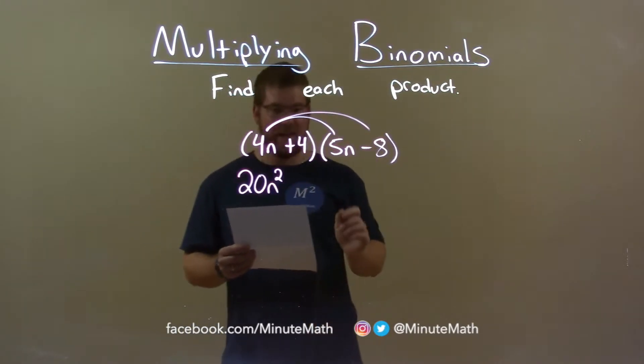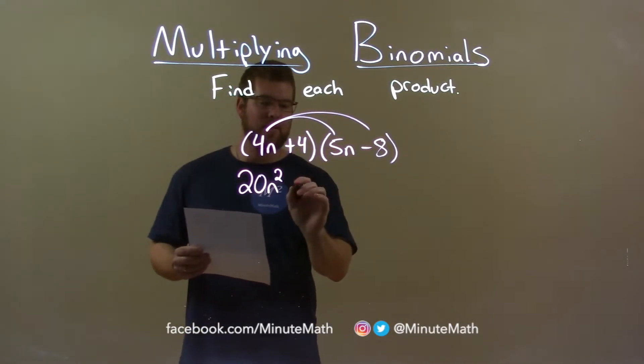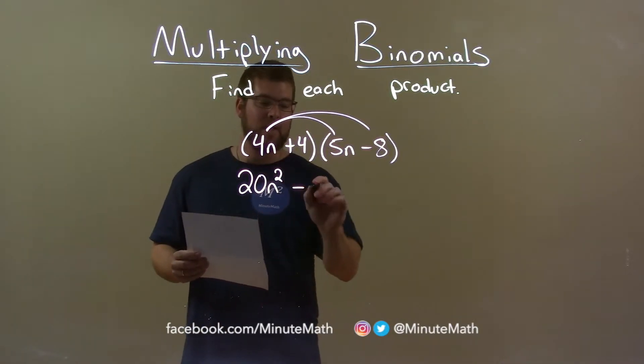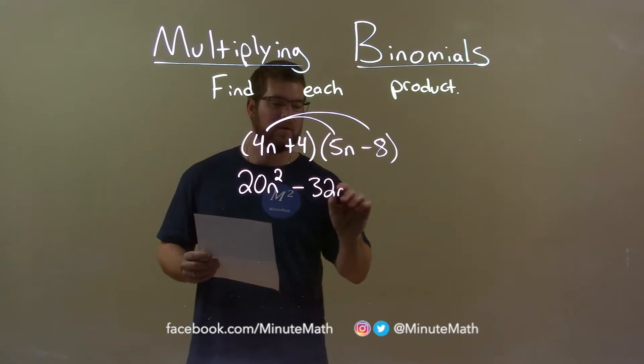4n times minus 8, so 4n times minus 8 is negative 32n.